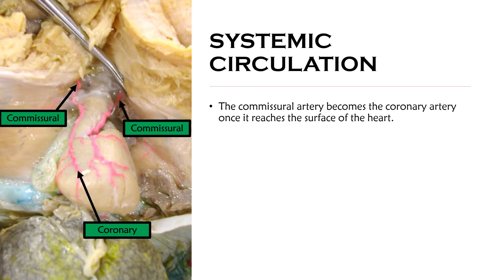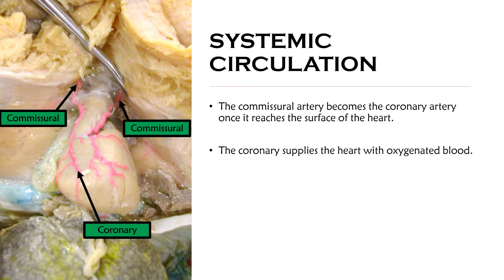Another branch is the commissural artery, which becomes the coronary artery once it reaches the surface of the heart. And we all know that the coronary supplies the heart with oxygenated blood.